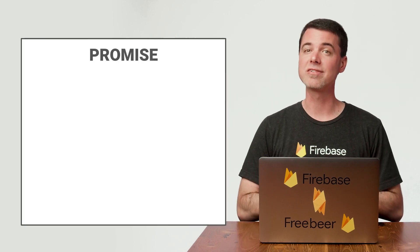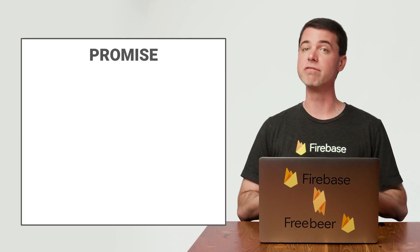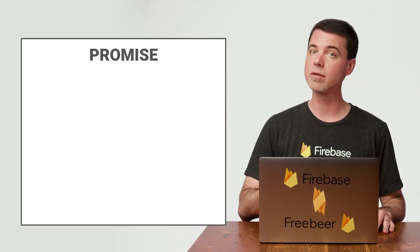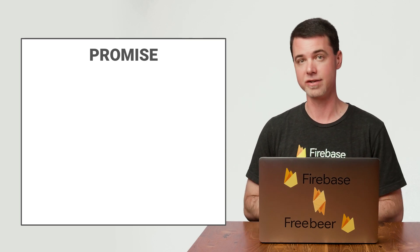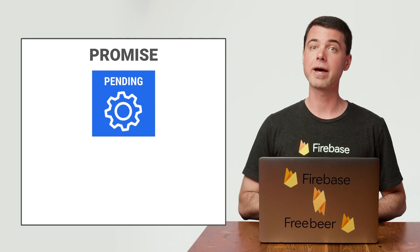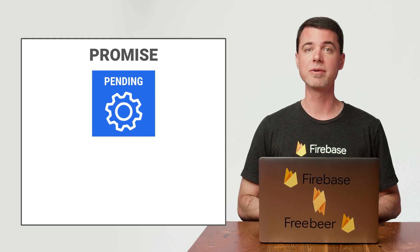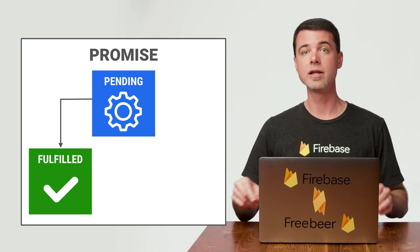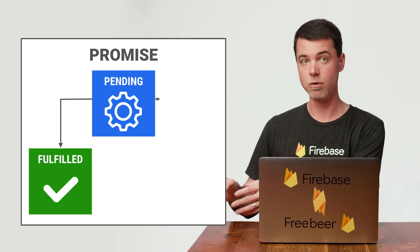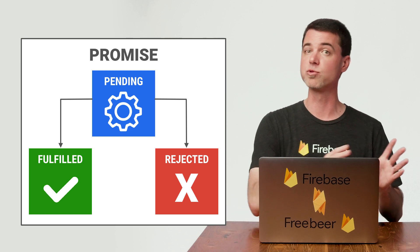A promise represents some asynchronous work that should eventually complete. If you're an Android developer, this is very similar to the task object that you use sometimes when dealing with the Firebase Android SDKs. When the work tracked by a promise is still executing, the promise is in a pending state. Then, if the work completes successfully, the promise is said to be fulfilled. Or if there's an error, the promise becomes rejected. These are the only three states that a promise can be in: pending, fulfilled, or rejected. And once the promise becomes fulfilled or rejected, it can never change state again.